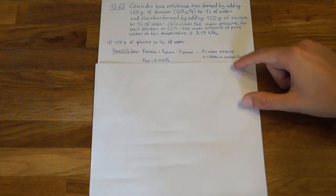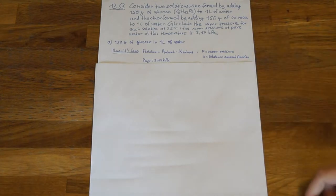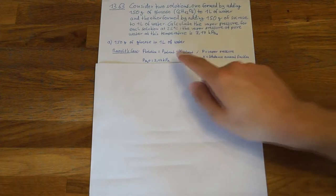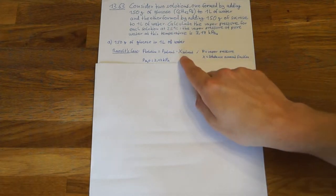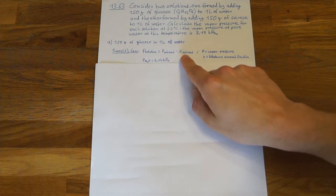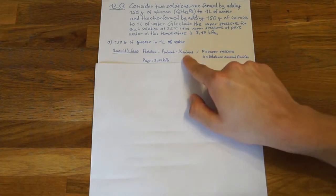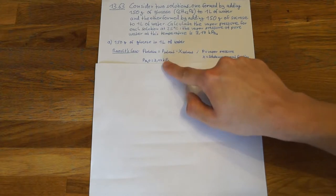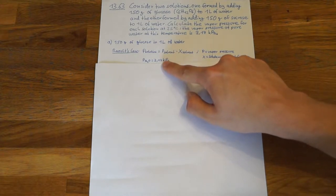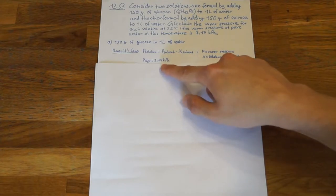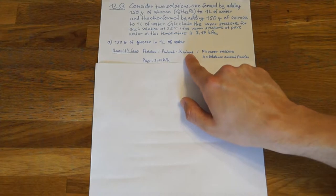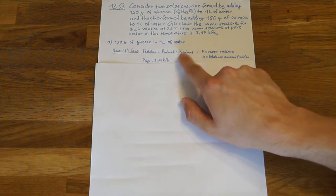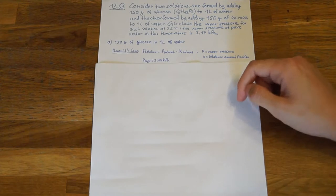To solve this task, we need Raoult's law, which states that the vapor pressure of our solution is the vapor pressure of our solvent multiplied by the substance amount fraction of our solvent. As we have already been given the vapor pressure of water, which is our solvent, we only have to find out the substance amount fraction of water to solve Raoult's law and get the vapor pressure.